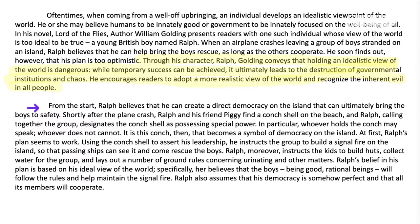The essay continues: 'From the start, Ralph believes that he can create a direct democracy on the island that can ultimately bring the boys to safety. Shortly after the plane crash, Ralph and his friend Piggy find a conch shell on the beach. Ralph, calling together the group, designates the conch shell as possessing special power — in particular, whoever holds the conch may speak; whoever does cannot. It is this, then, that becomes a symbol of democracy.' So we have a detailed summary of something that happened in the book. The more detailed you can get, the better. The author is also touching on literary devices — the conch shell is a symbol of democracy. Wherever possible, you want to try to delve into literary devices in your essay.